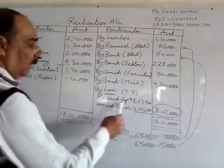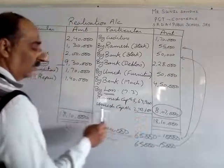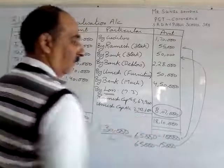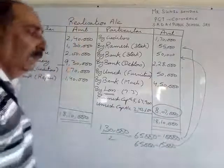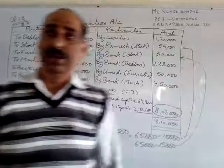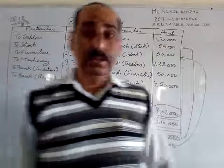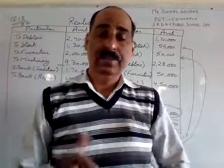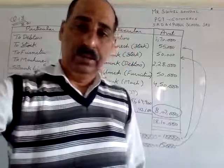To Ramesh capital account 5,64,900 aur Umesh capital account 2,42,100. Yahi basically realization account hai — how to prepare realization account. In the next video we will discuss how to prepare realization account and capital account. Goodbye students.